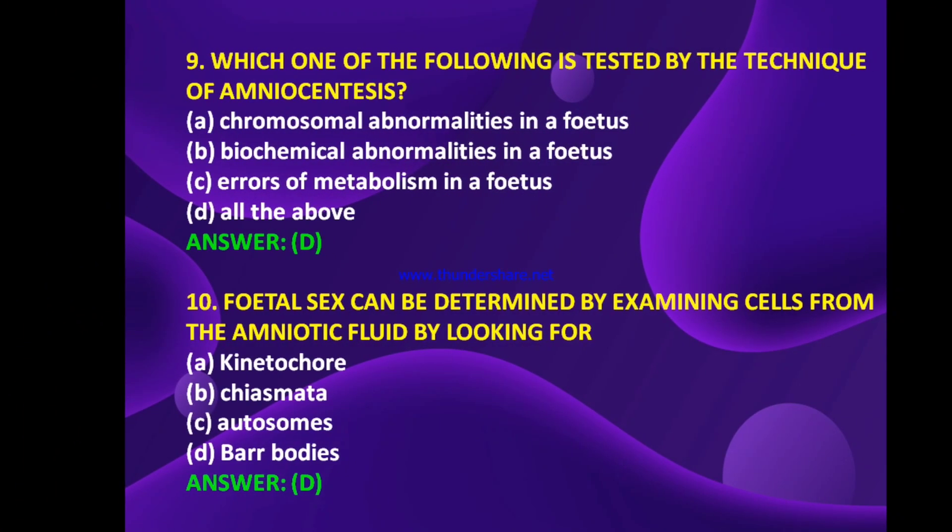Which one of the following is tested by the technique of amniocentesis — chromosomal abnormalities in a fetus, biochemical abnormalities in a fetus, errors of metabolism in a fetus, or all of the above? The answer is D — all of the above.